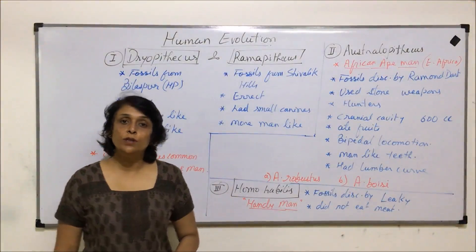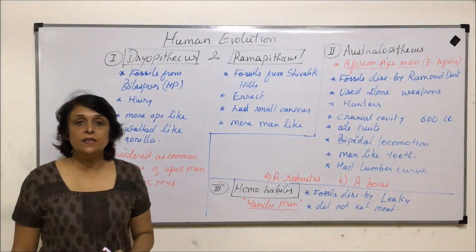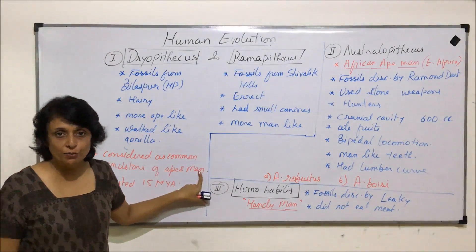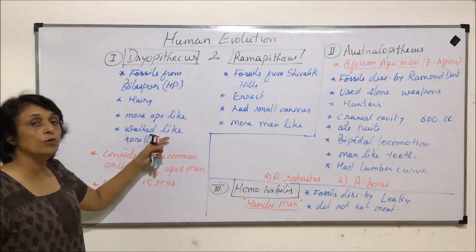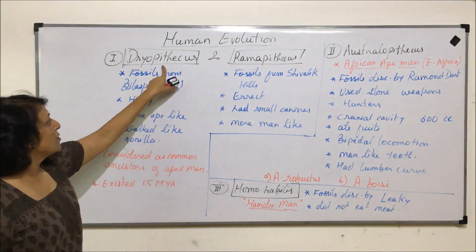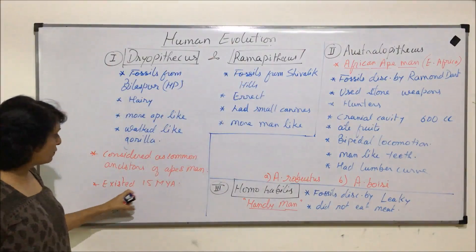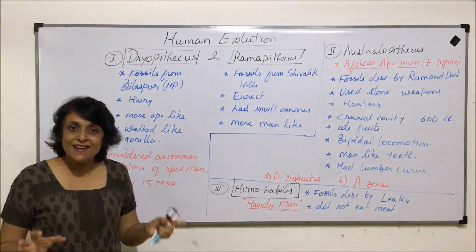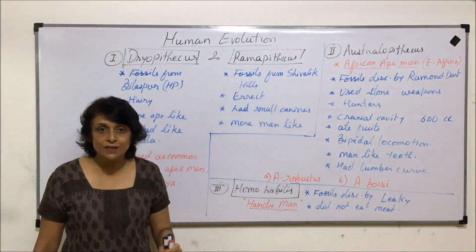Let us discuss human evolution, starting from Dryopithecus, which are considered as the common ancestors of apes and human beings. Dryopithecus and Ramapithecus existed about 15 million years ago. They differ slightly — Dryopithecus is more ape-like, and Ramapithecus is more human-like.